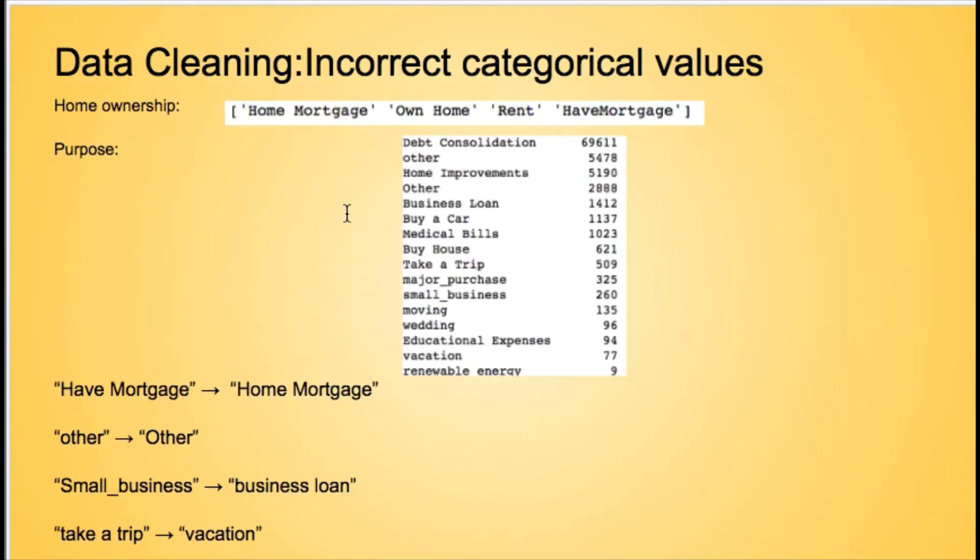For the categorical values, we found some abnormality in home ownership and purpose. For home ownership, there are some duplicate values as home mortgage and HM mortgage. For purpose, there are duplicate values as other, small business, and take a trip. We replaced the values with home mortgage, other business loan, and vacation to reduce the count of unique features in the dataset.